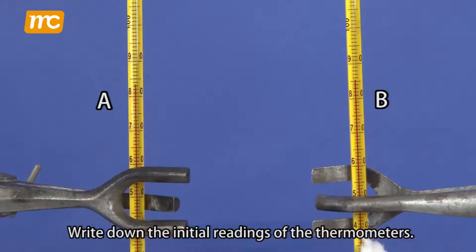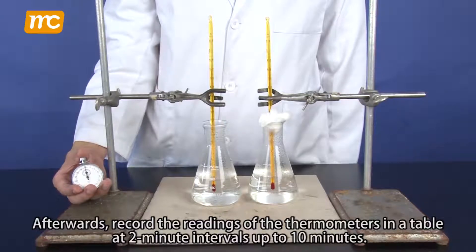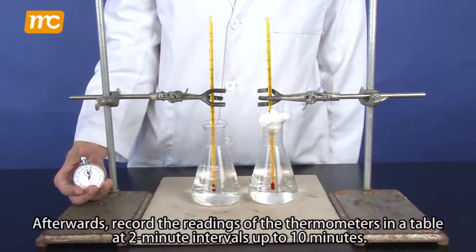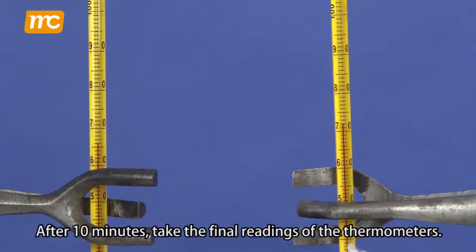Write down the initial reading of the thermometers. Afterwards, record the readings of the thermometers in a table at 2-minute intervals up to 10 minutes. After 10 minutes, take the final readings of the thermometers.